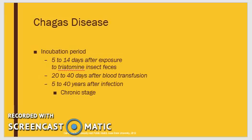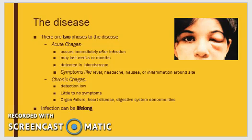The incubation period in humans is usually at least 5 to 14 days after exposure to the insect feces, 20 to 40 days after blood transfusion, and 5 to 40 years after infection. Many people do not become symptomatic until the chronic stage. The acute phase is defined as the period during which the parasite can be found easily in the blood. Many people, particularly adults, are asymptomatic during this stage.